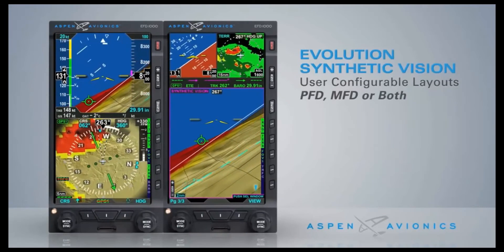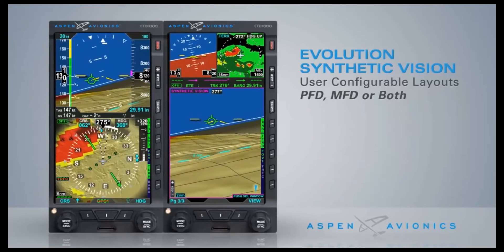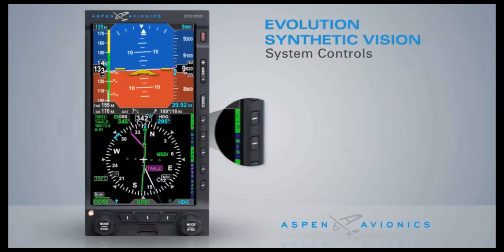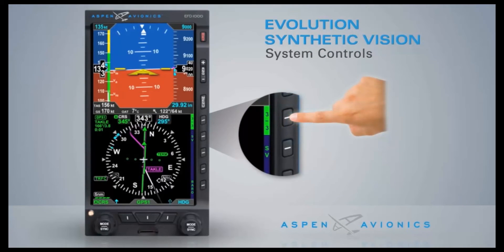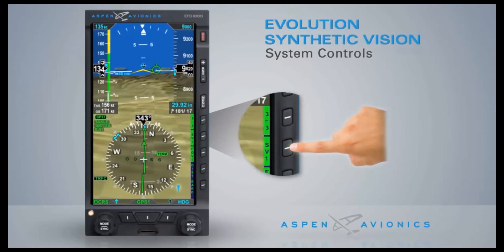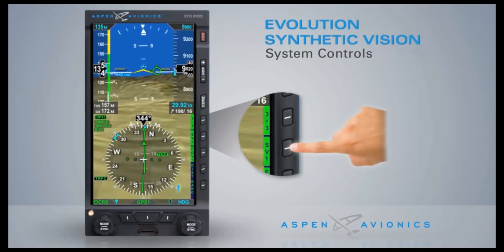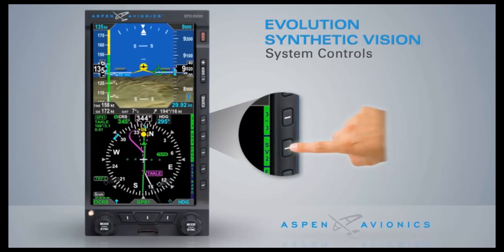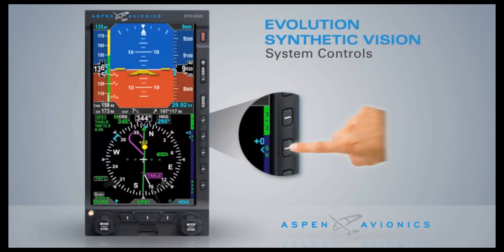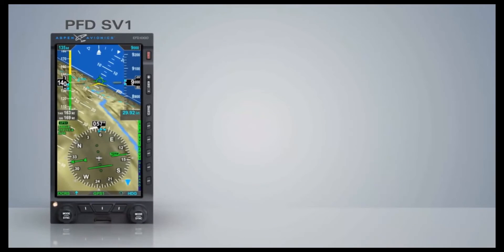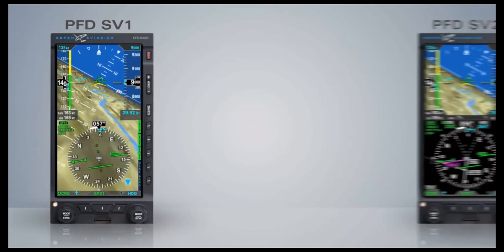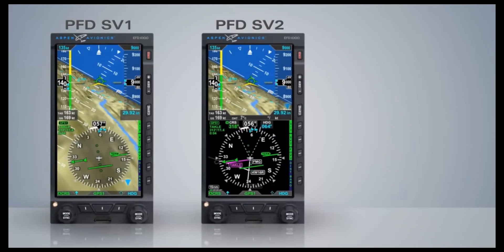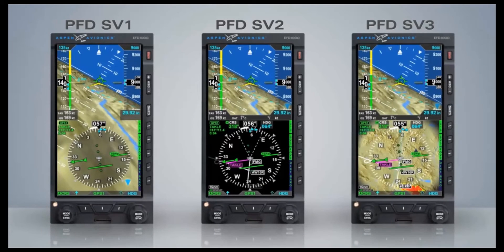On the primary flight display, the multi-function flight display, or both. The Evolution Synthetic Vision option is accessed on the PFD by using the top hotkey to access the third menu level. Pressing the SV hotkey enables the ESV function and changes the SV hotkey label to SV1. Each successive press of the SV hotkey cycles through the synthetic vision views: SV1, SV2, SV3, and SV off. Synthetic Vision 1 presents synthetic vision under the entire primary flight data area of the PFD.